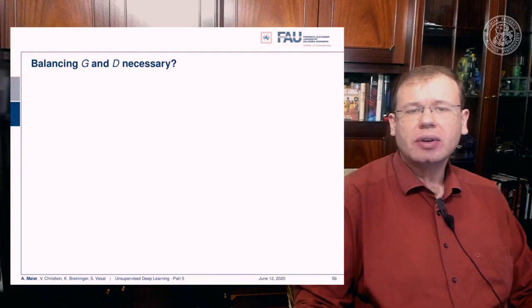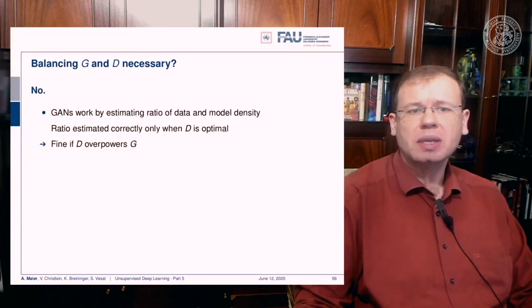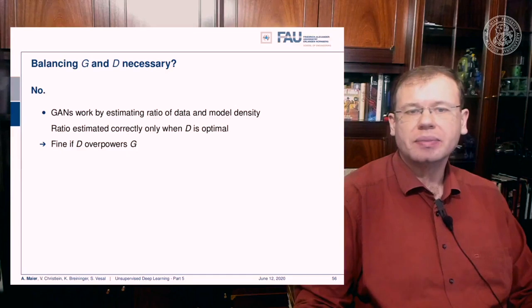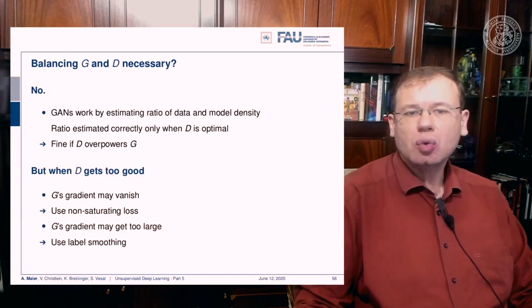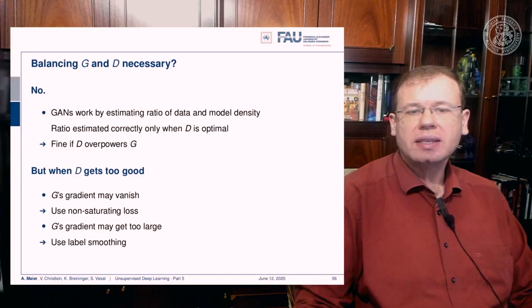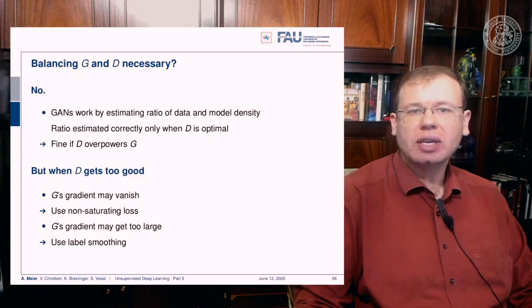Is balancing between the generator and the discriminator necessary? No, it's not. GANs work by estimating the ratio of data and model density, and this ratio is estimated correctly only when the discriminator is optimal, so it's fine if your discriminator overpowers the generator. When the discriminator gets too good, gradients may vanish — you can use tricks like the non-saturating loss or Wasserstein GANs. If the generator's gradients get too large, you can use label smoothing.